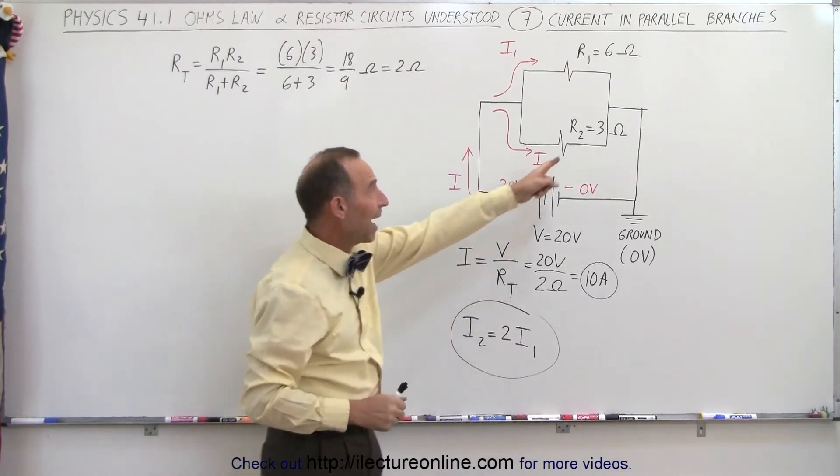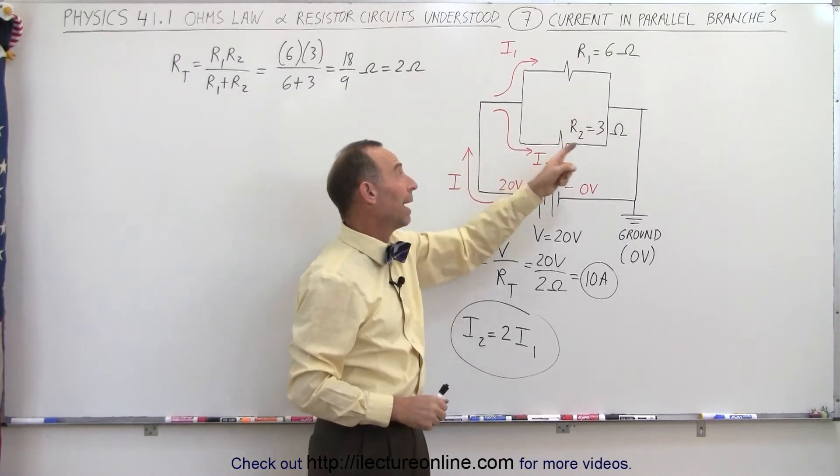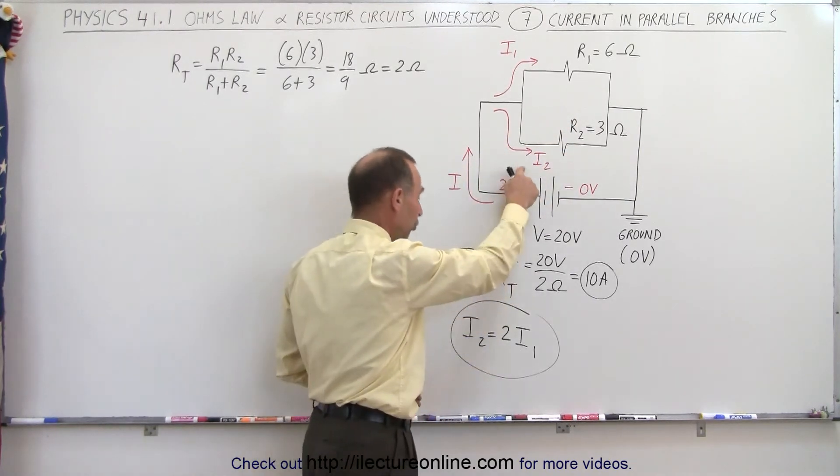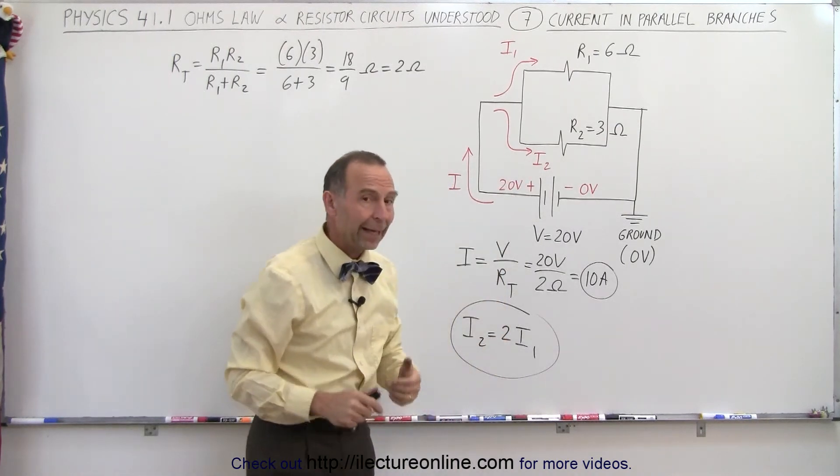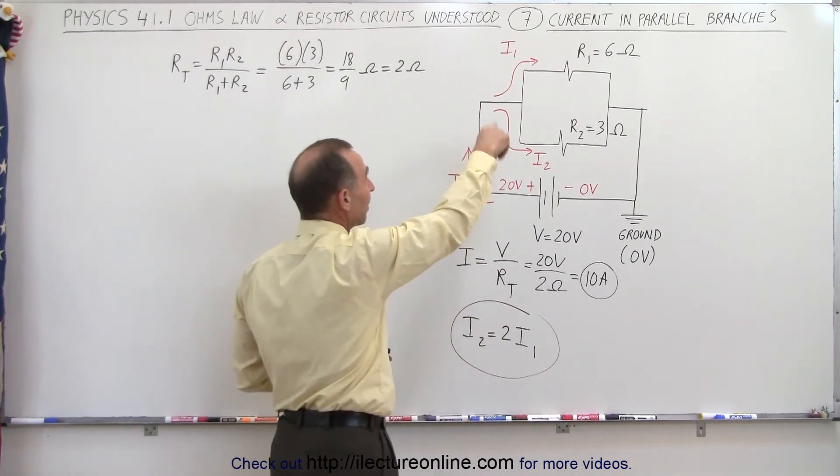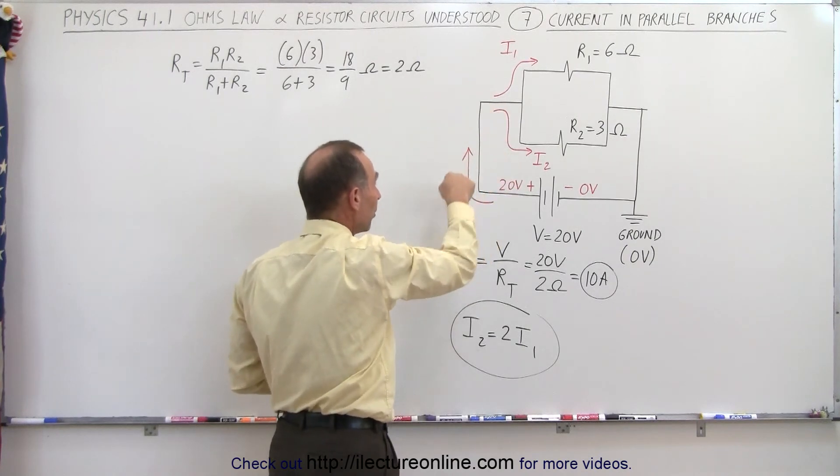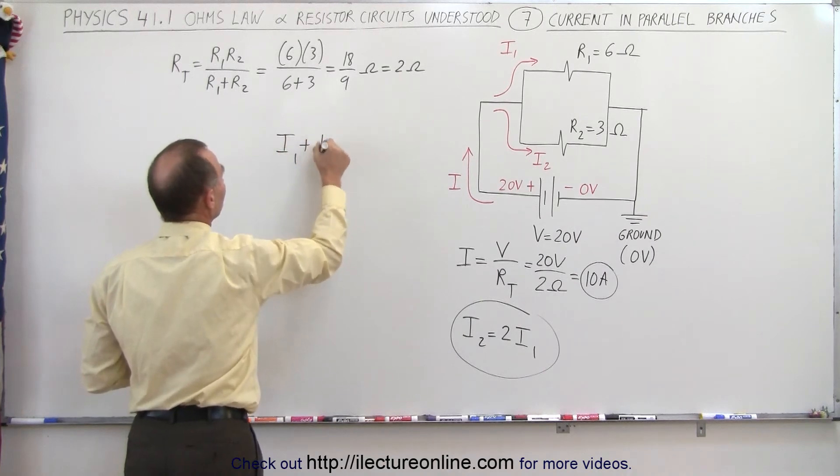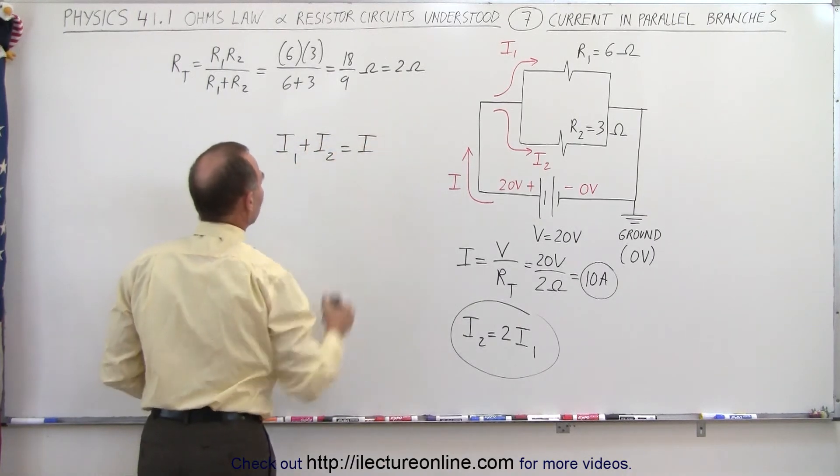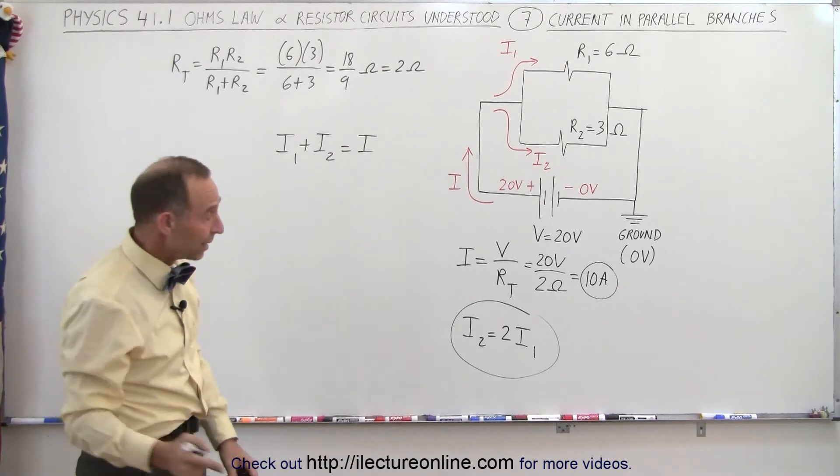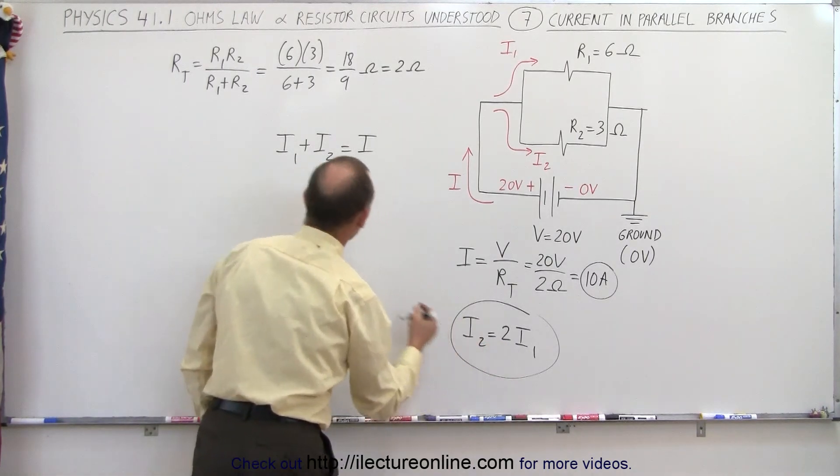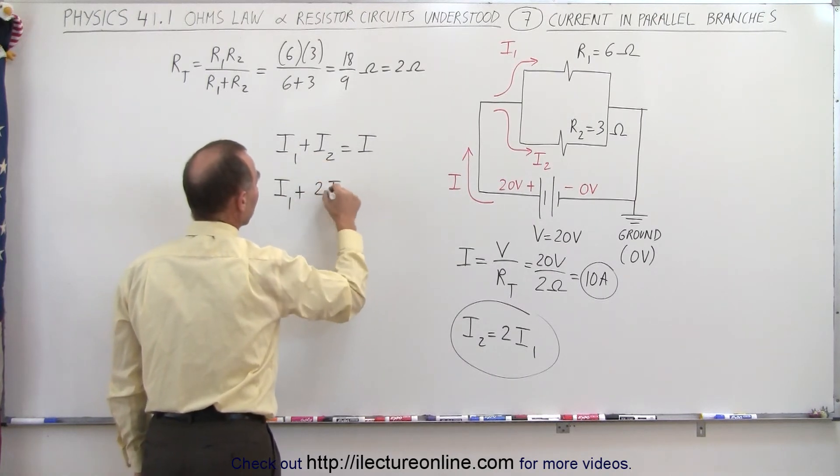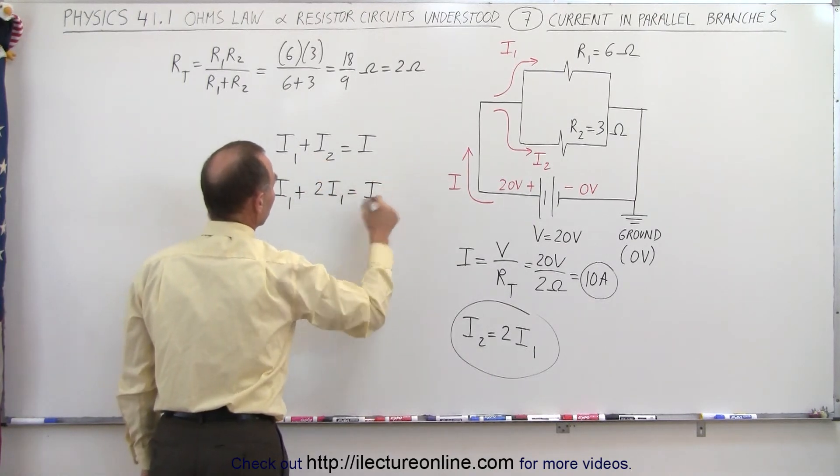Again, we have half the resistance here compared to the resistance up there. Half the resistance means twice the current, therefore I2 must be twice I1. I also know that the two currents added together, I1 plus I2, must add up to the total current. So I1 plus I2 must equal the total current I. Since I2 equals twice I1, we can say that I1 plus 2 times I1 must equal the total current I.